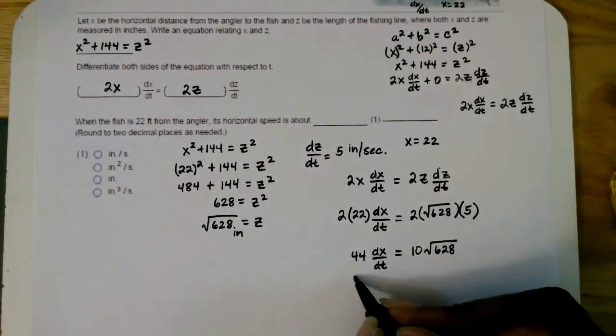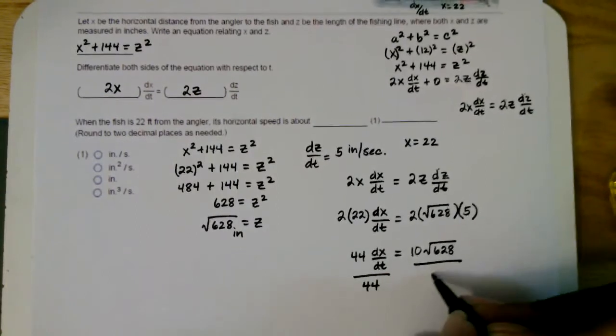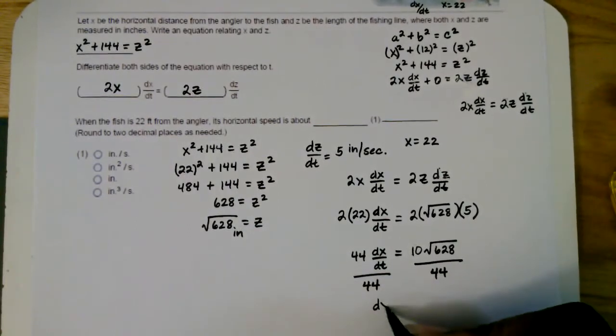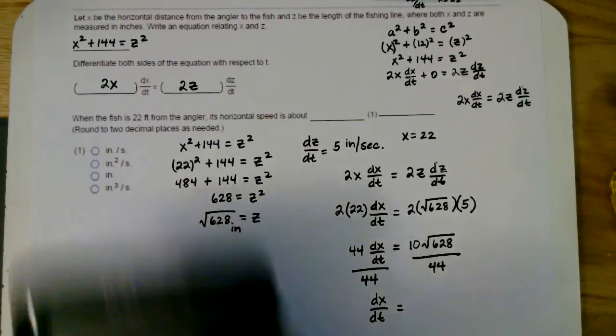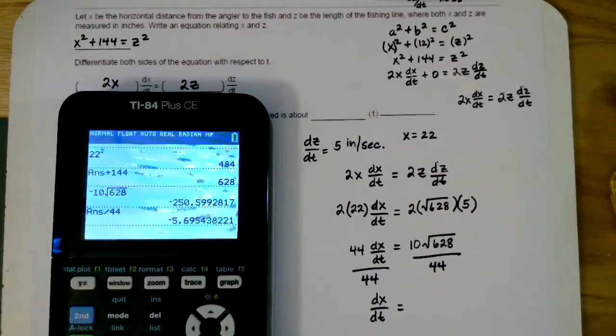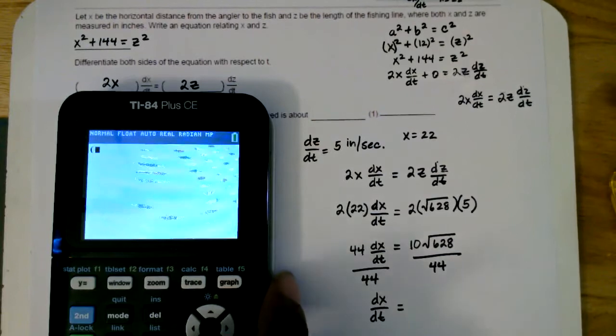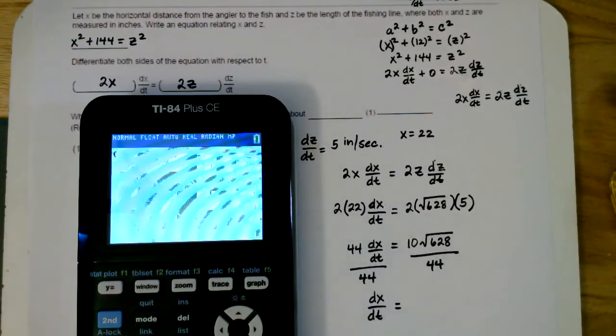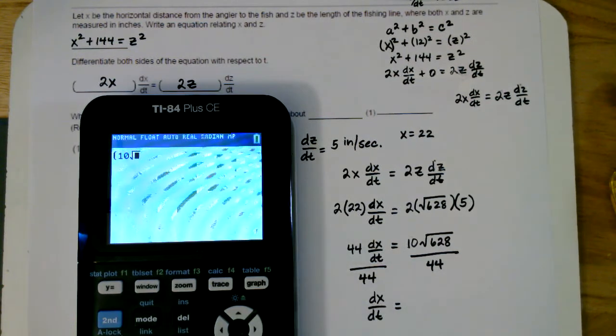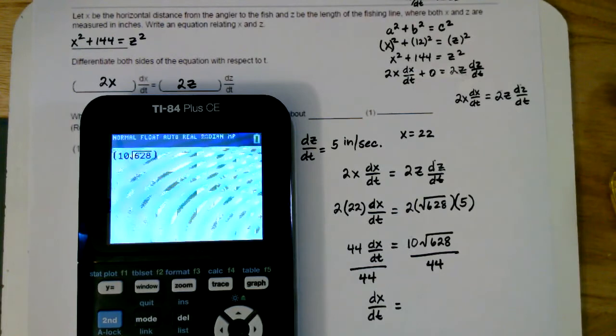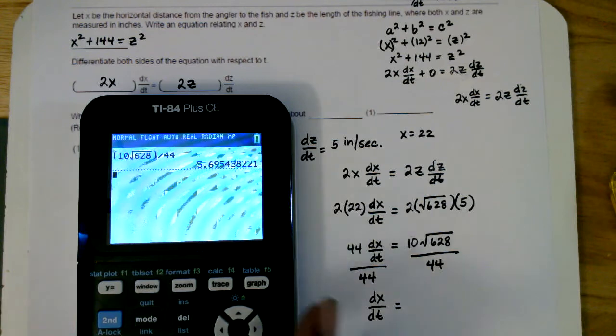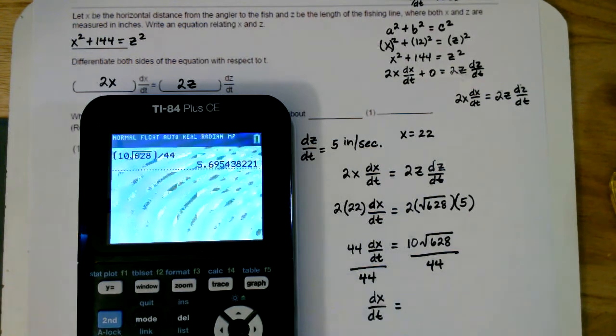So 44 dx/dt is equal to 10√628. Now to get dx/dt by itself, you'll divide both sides by 44. So dx/dt will be equal to 10√628 divided by 44. In the calculator, I'm going to put the 10 square root of 628 in parentheses, use your right arrow key to get out of the radical, close the parentheses, divide that by 44. And to two decimal places, this will end up being 5.70.